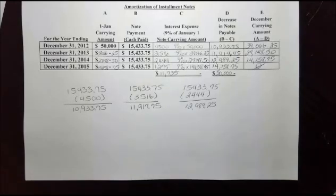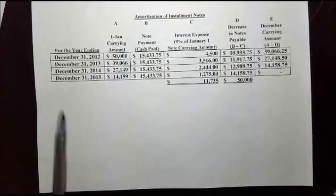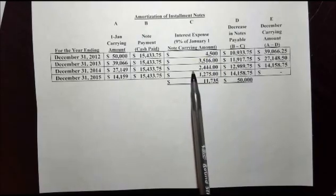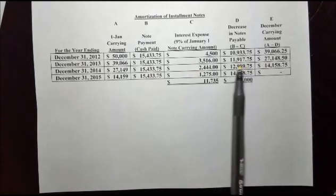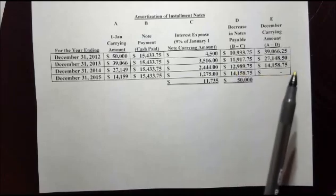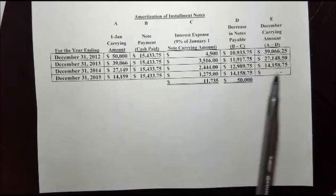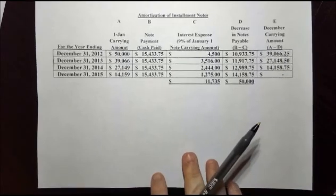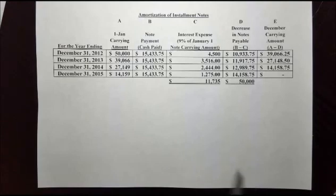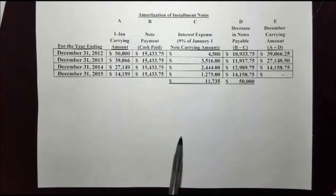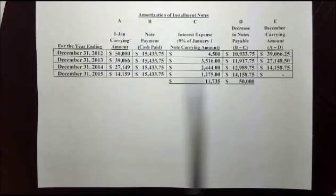Let me show you the finished product all nice and neat. We had a $50,000 note at 9% interest. The interest determined each year was deducted from the annual payment to find how much the principal decreases each year, showing our carrying amount. The end goal is that by the last year of paying the note, you should come up with zero. This is how we put together an installment note amortization schedule — something you'll see every time you take a loan, with a predetermined payment amount based on the interest being charged.